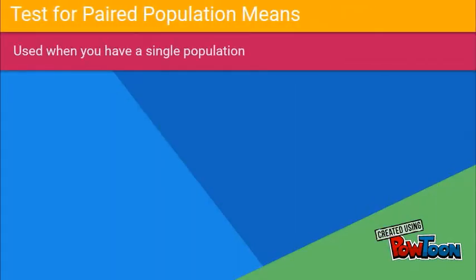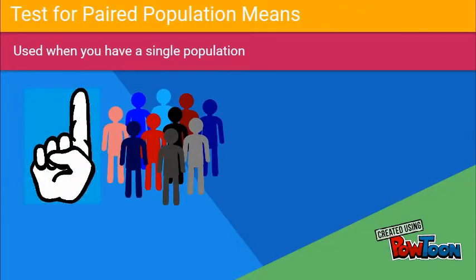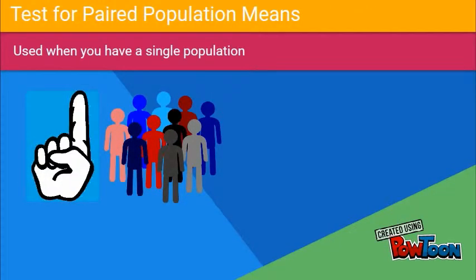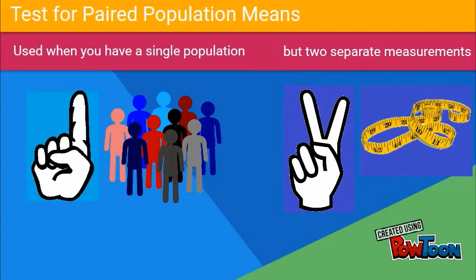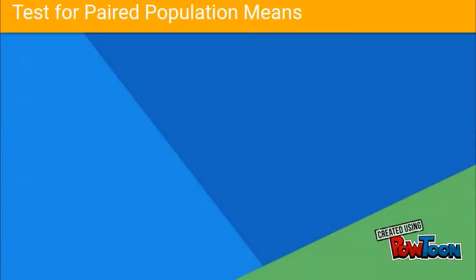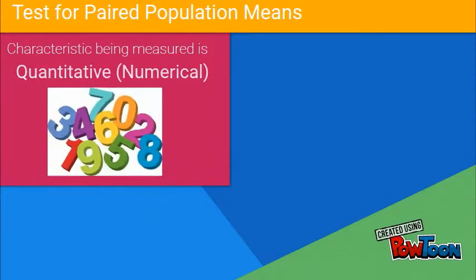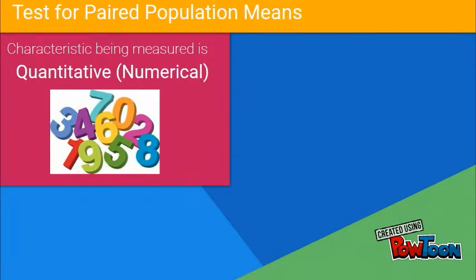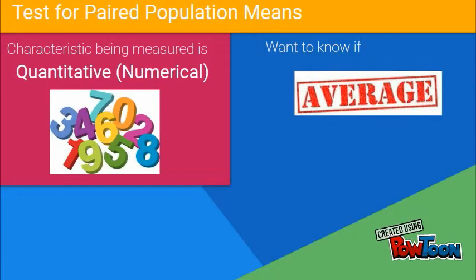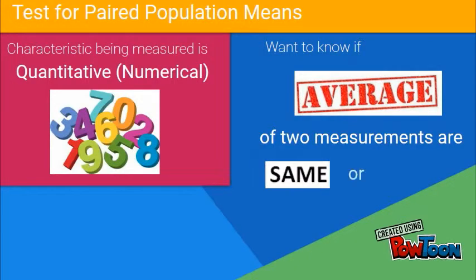This hypothesis test is used when you have a single population but two separate measurements for the group. Furthermore, the characteristic being measured is quantitative — that is, numerical — and you want to know if the averages or means of the two measurements are the same or different.